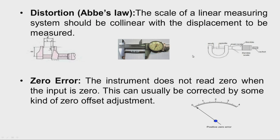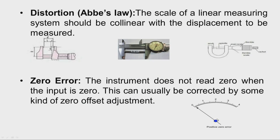Another term is zero error. The instrument does not read zero when the input is zero. This happens due to change in dimensions of internal components caused by variation in temperature. It can be adjusted using a zero offset adjustment provided on the instrument. When there is no signal applied and the pointer shows some deflection, this is known as zero error or zero drift.